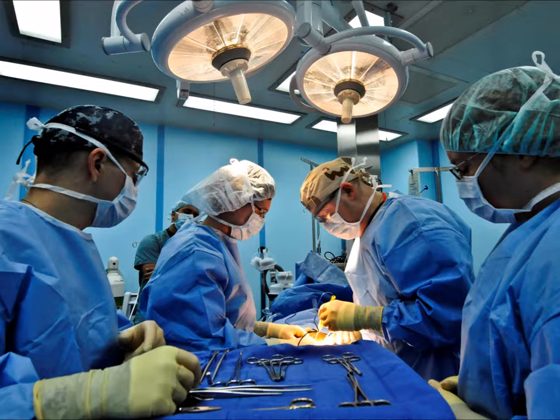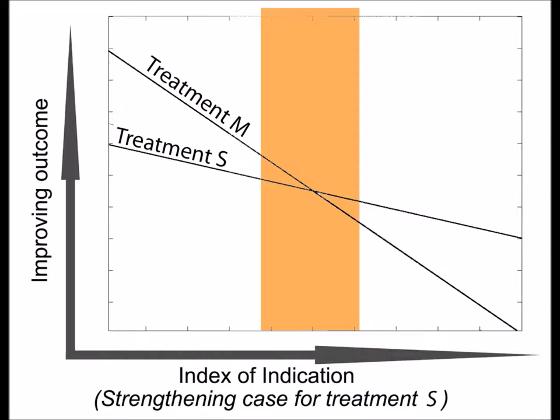Conversely, for patients at low risk with much to gain from surgery, it is indicated. Between these extremes lies a spectrum of varying strength of indication. At points on this spectrum, indication turns to equipoise and then to contraindication. Essential to null-seeking trials is making this spectrum explicit. The null-seeking trial model is based on a quantifiable outcome which is modelled as a function of a numerical index of the strength of the indication for surgery.